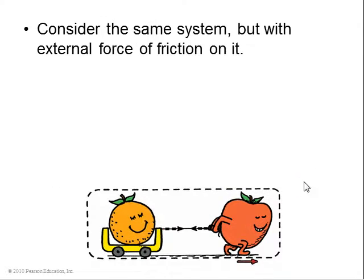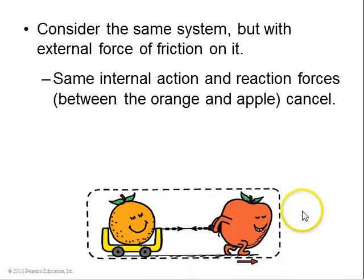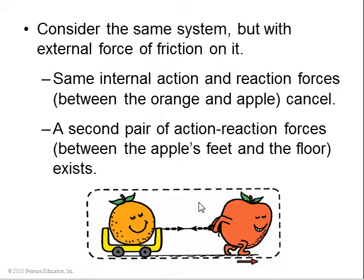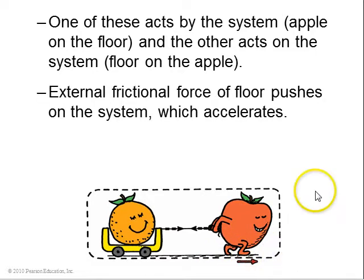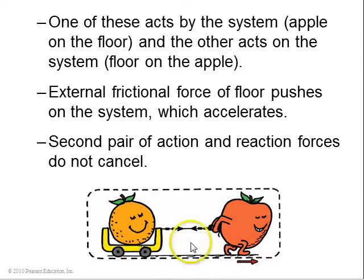So there needs to be something else here. Consider the same system, but now there's an external force of friction on it. So there's the same internal action-reaction forces between the orange and the apple, but there's another pair of action-reaction forces between the apple's feet and the floor. So one of these acts by the system. The apple acts on the floor, and that's a backwards force, but the other acts on the system. The floor acts with a forward force on the apple, and it's this external frictional force that pushes this whole system and causes them both to move towards the right. So the second pair of action-reaction forces do not cancel.